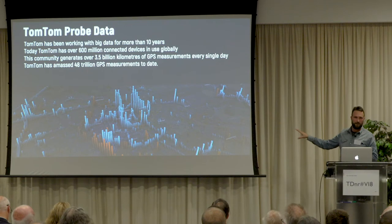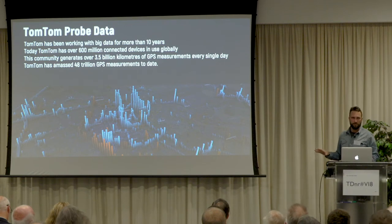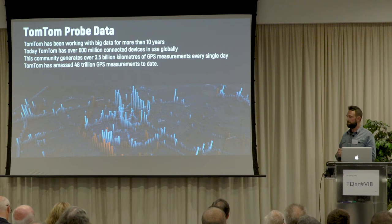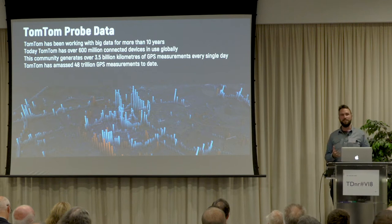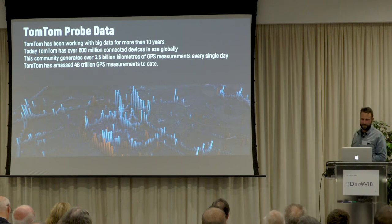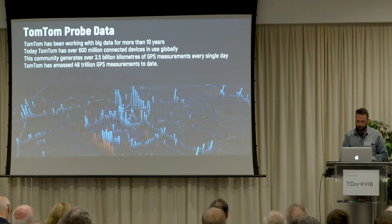They've amassed 48 trillion GPS measurements to date. What does that mean spatially? How can we as cartographers understand that generalisation? If you took the city of Amsterdam and had no mapping data for it at all, using TomTom's probe data you could accurately draw a street network for Amsterdam in about eight minutes of journey data. It's a really granular, really interesting data set, and we had a lot of fun doing all sorts of visualisations with it.